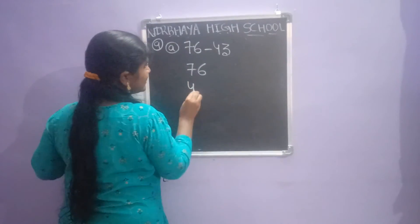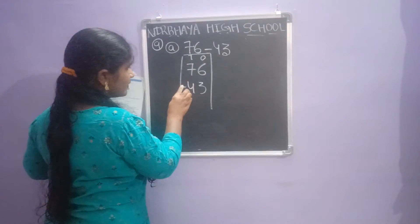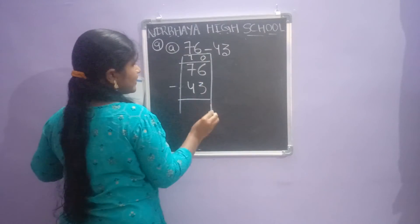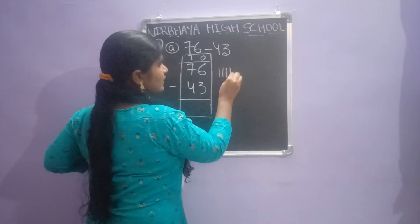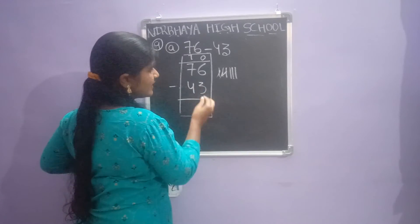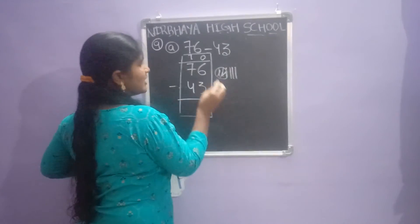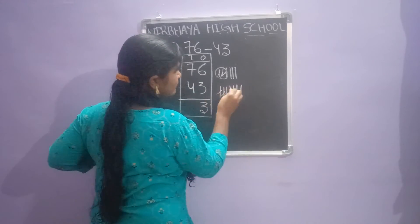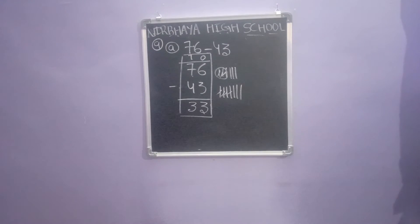Write the numbers one below the other. In the ones place: draw 6 lines and remove 3 lines. After removing, 3 lines are remaining — write 3. In the tens place: draw 7 lines and remove 4 lines. After removing, 3 lines are remaining. So seventy-six minus forty-three equals thirty-three.